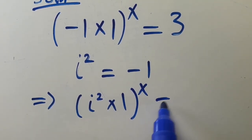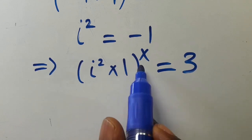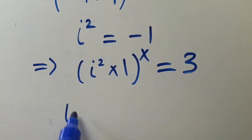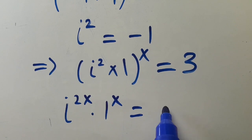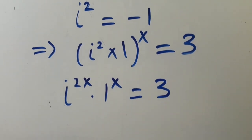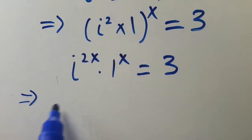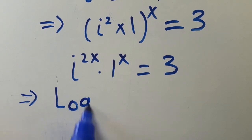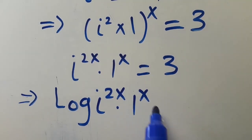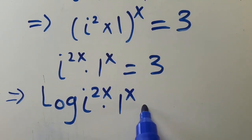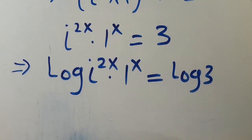All to the power of x equals three. From here, let's share the power, so we have i to the power of 2x times one to the power of x equals three. Then let us introduce log to both sides, so we are going to have log of i to the power of 2x times one to the power of x equals log three.